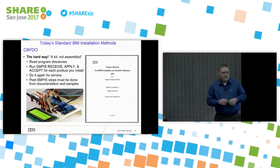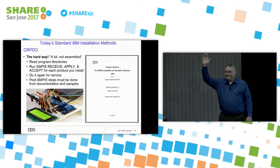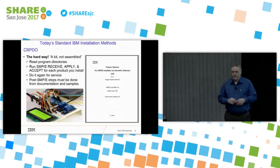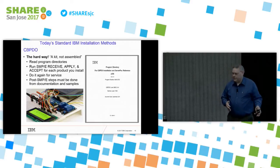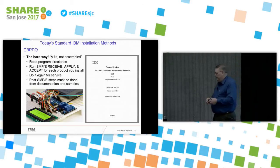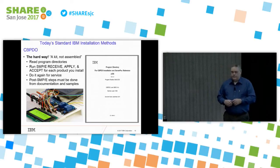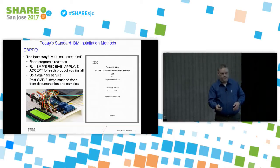And then there's CBPDO — everybody's favorite document. Who loves program directories? You get to read the program directory. You get to run receive, apply, accept yourself for the product FMIDs, and then go back and do it again for all the PTFs to bring it up to a service level you actually want. All of the post-SMPE steps are documented in a combination of the program directory and other books. ServerPak, at least, has taken care of the stuff in the program directory, but there are still those other books you have to go to either way.